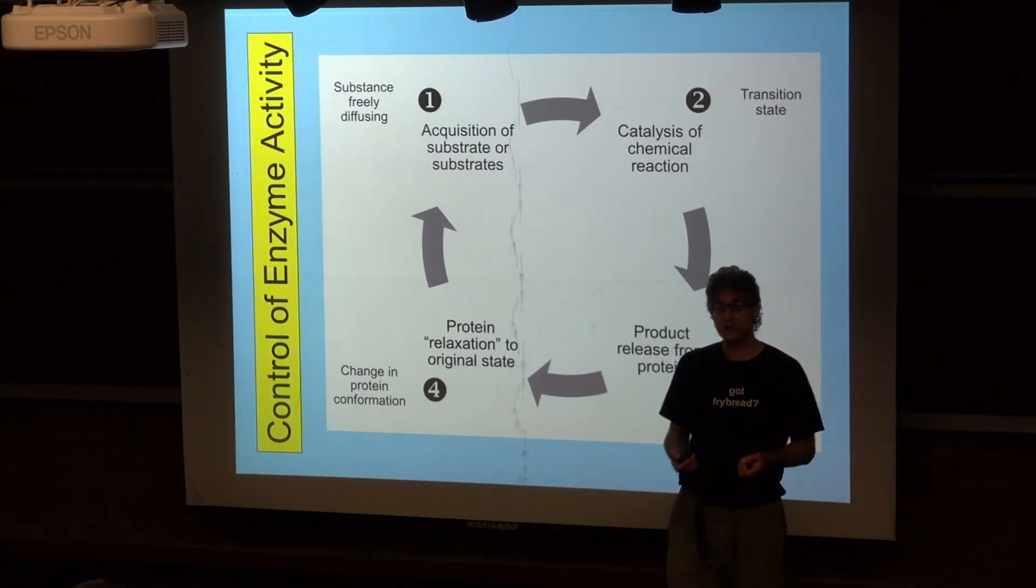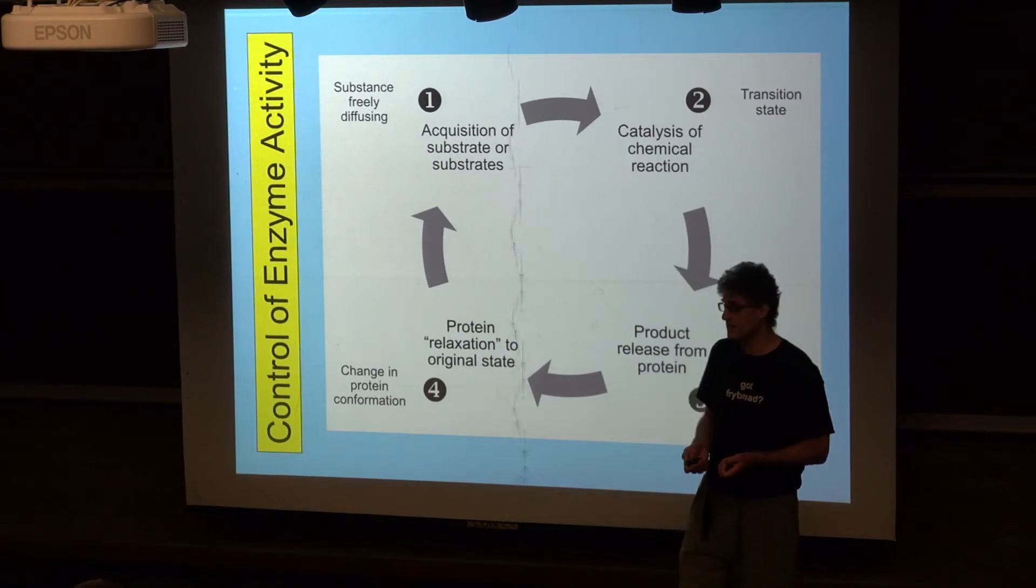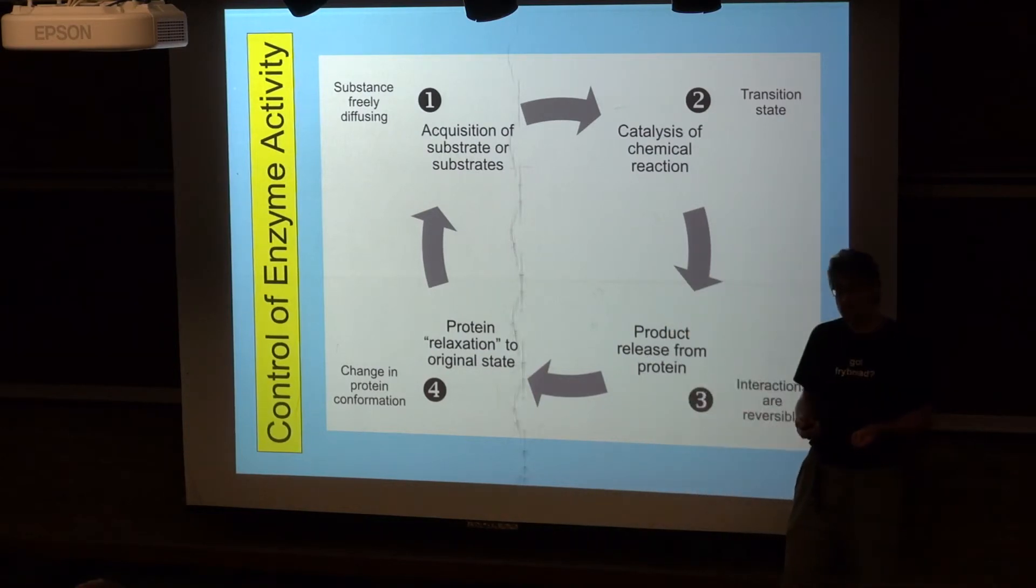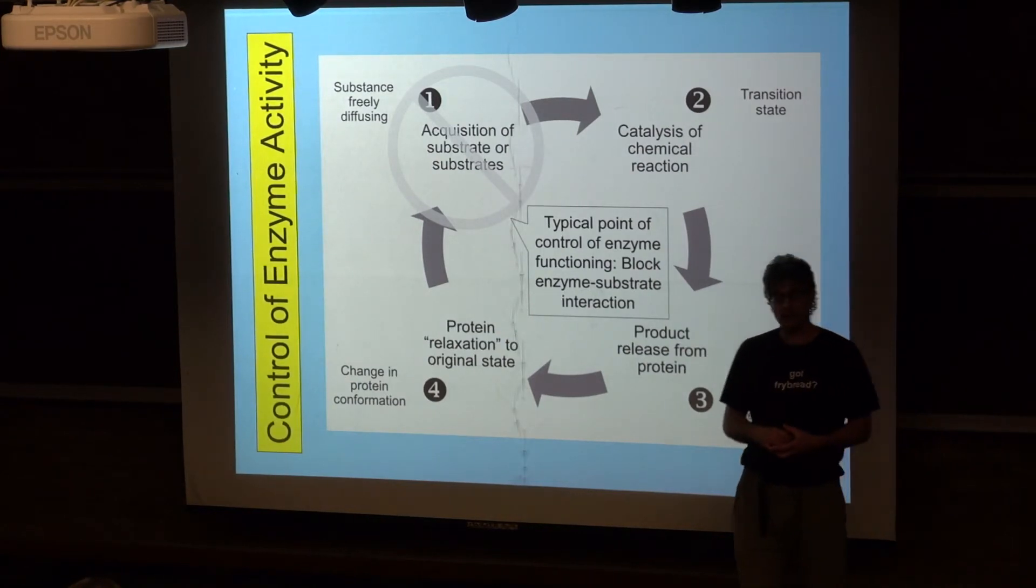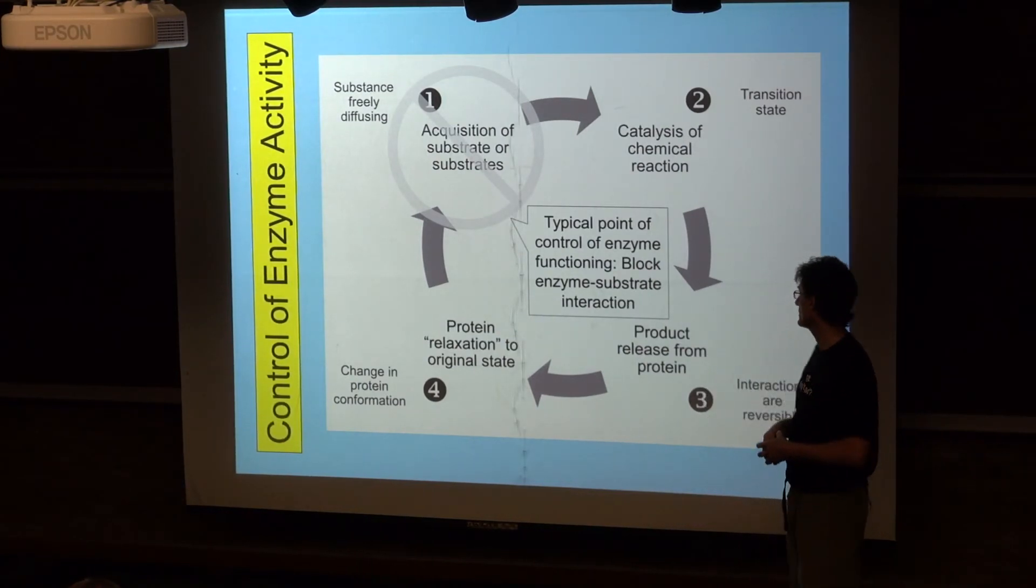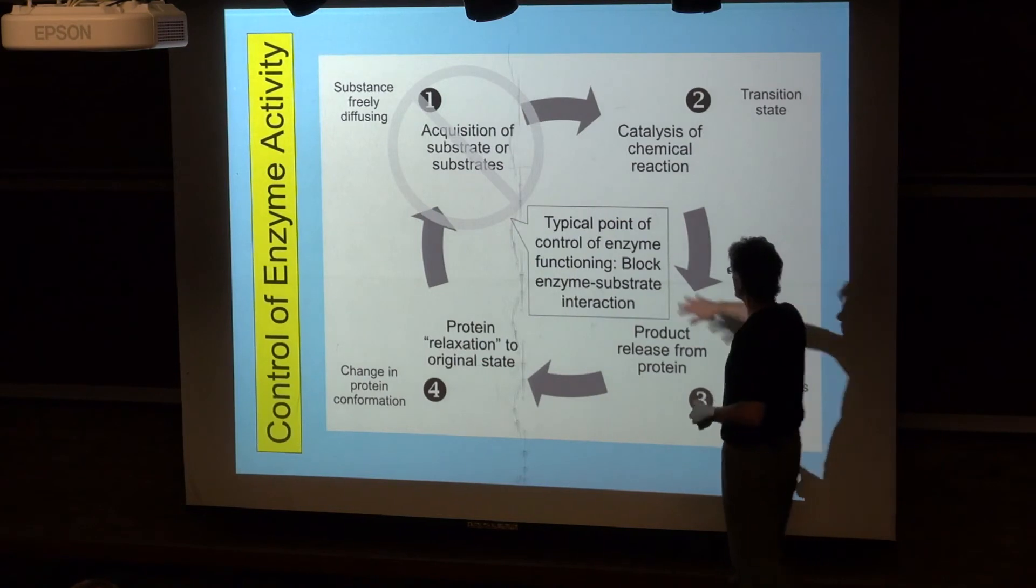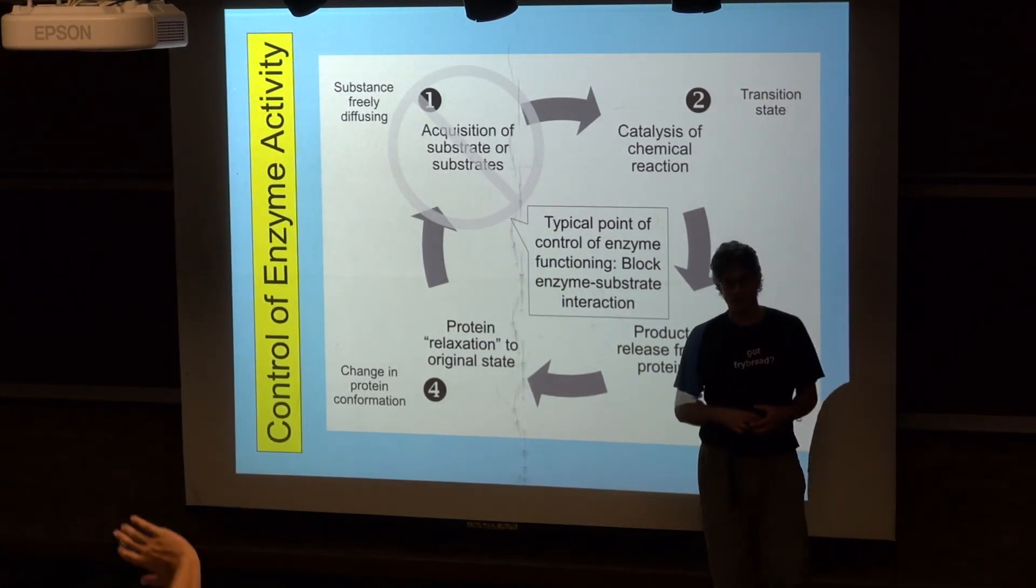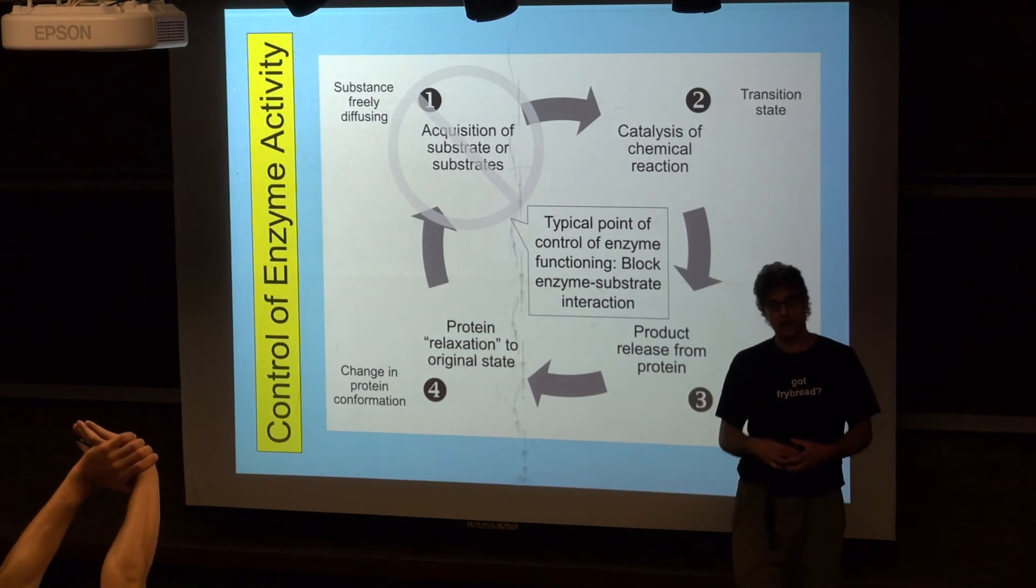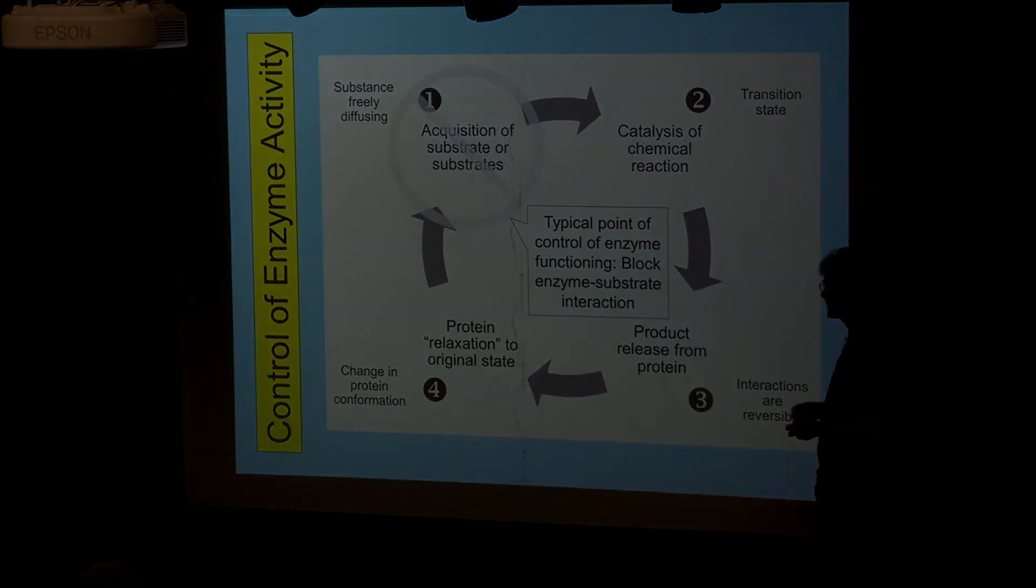So we have mechanisms of control of enzyme functioning, and these mechanisms by and large work by blocking the binding of the substrate to the active site. A typical point of control of enzyme functioning is blocking the formation of the enzyme-substrate complex by blocking the enzyme-substrate interaction.